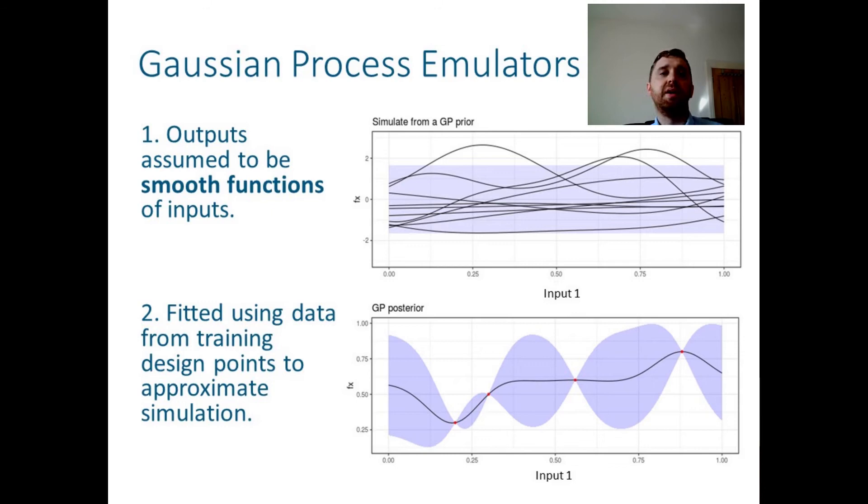Now, such a posterior distribution is displayed in the figure in the slide, where you can see how the distribution has been updated to account for the outputs observed at four training points, represented by the red dots in the figure.